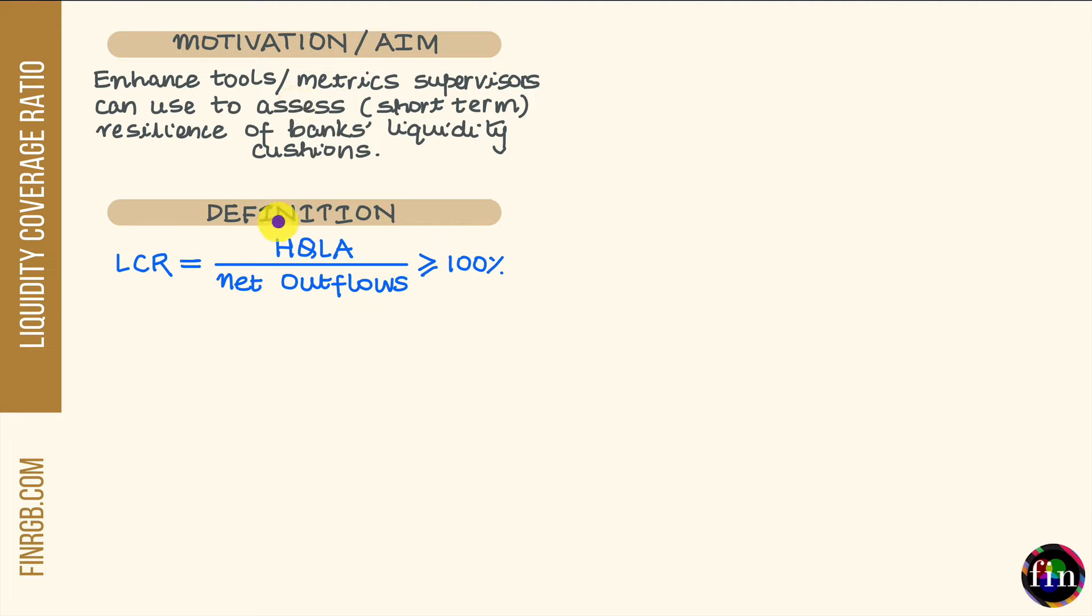To understand what this means, let's look at the definition of the LCR. The liquidity coverage ratio is simply the ratio of a bank's high-quality liquid assets (HQLA) to the net expected cash outflows during a 30-day period of significant liquidity-related stress. 30 days is believed to be the minimum time that a bank or its supervisors would need to take corrective action if something were to go wrong.